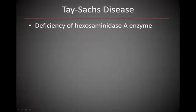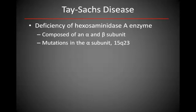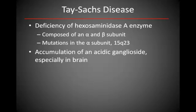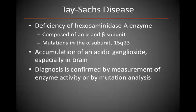The hexosaminidase A enzyme is composed of two protein subunits, alpha and beta. Mutations in the alpha subunit cause Tay-Sachs disease, leading to accumulation of gangliosides in the brain, as previously illustrated. Diagnosis can be confirmed either by enzyme analysis or mutation analysis of the hexosaminidase A gene.